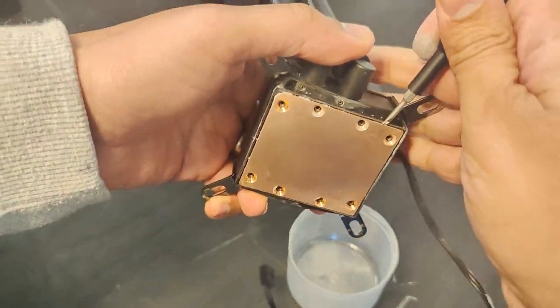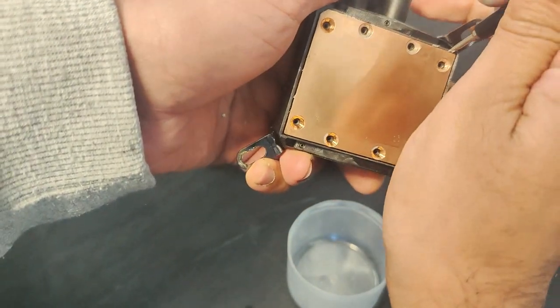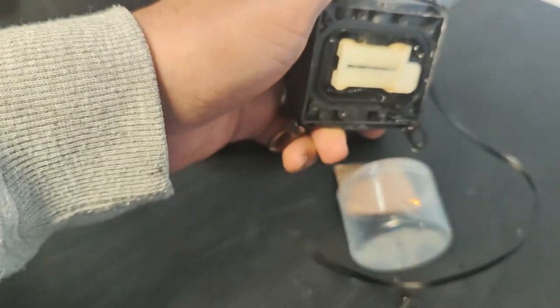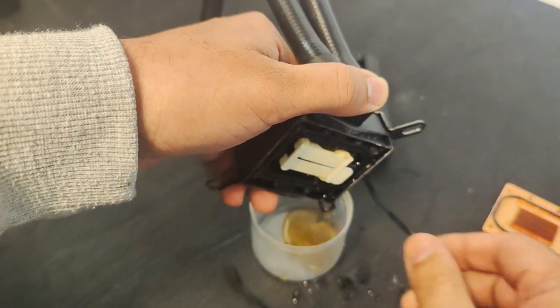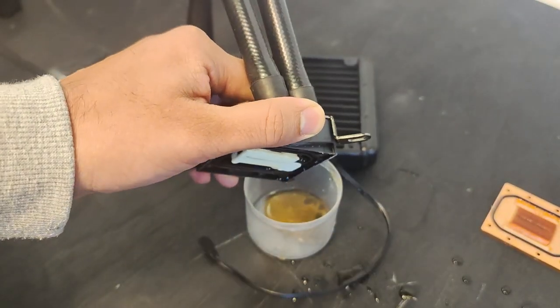The next thing you want to do is grab a flat head screwdriver and you just want to gently pry off the metal plate. It can be stuck on there, so just take your time and do it slowly. Also there's a rubber seal on the back which makes it a little bit harder to get off.